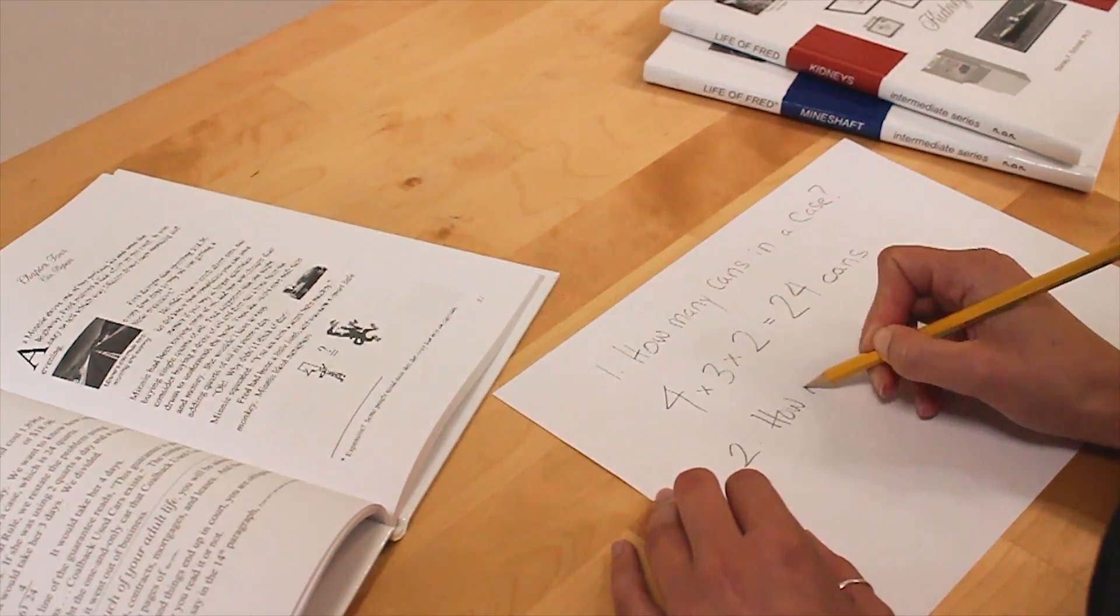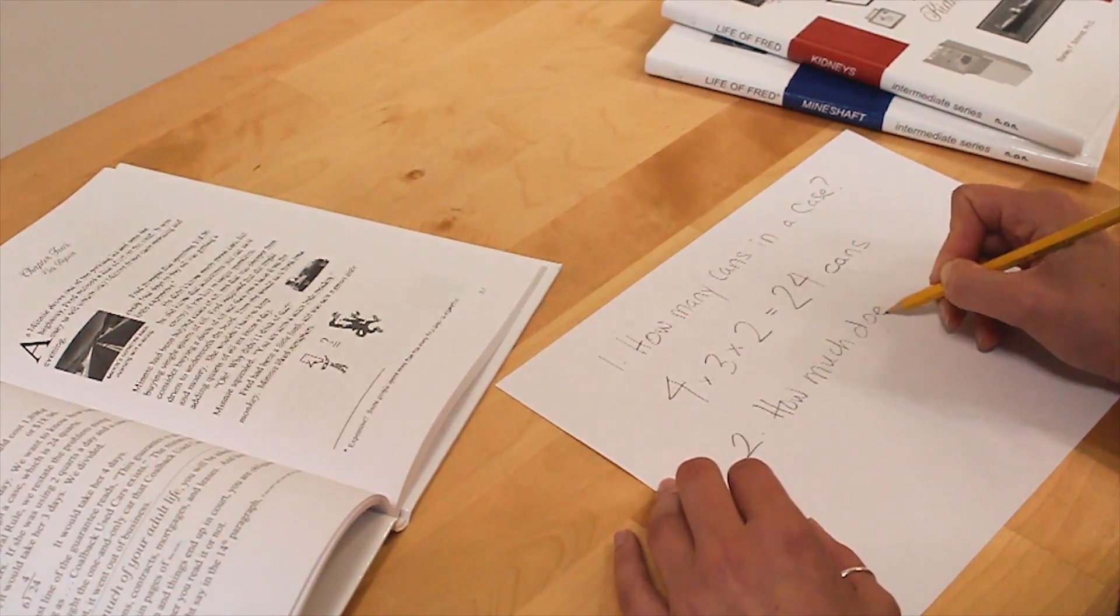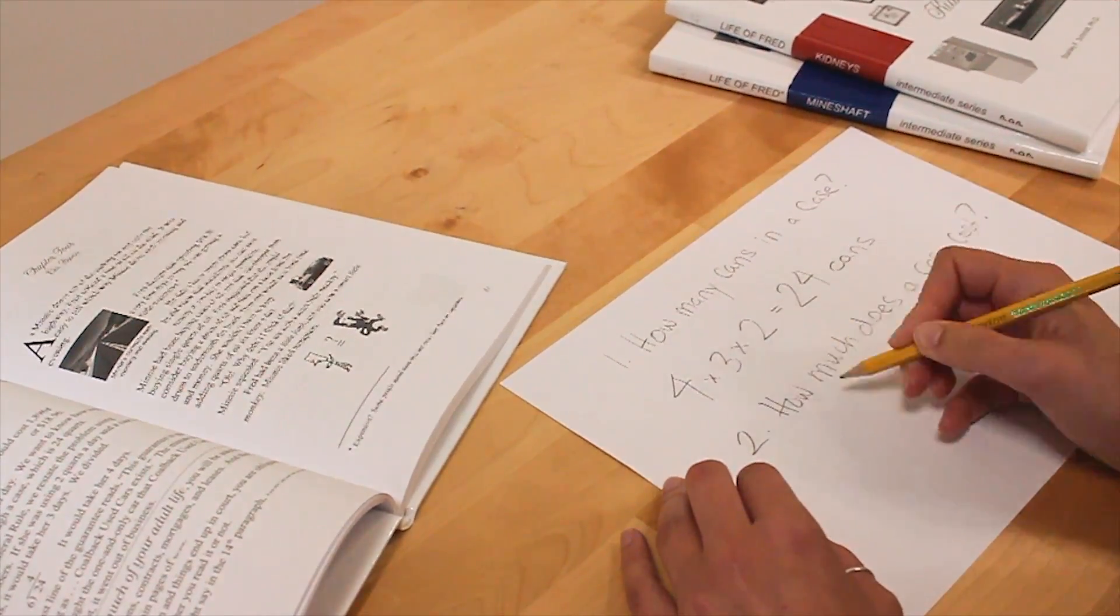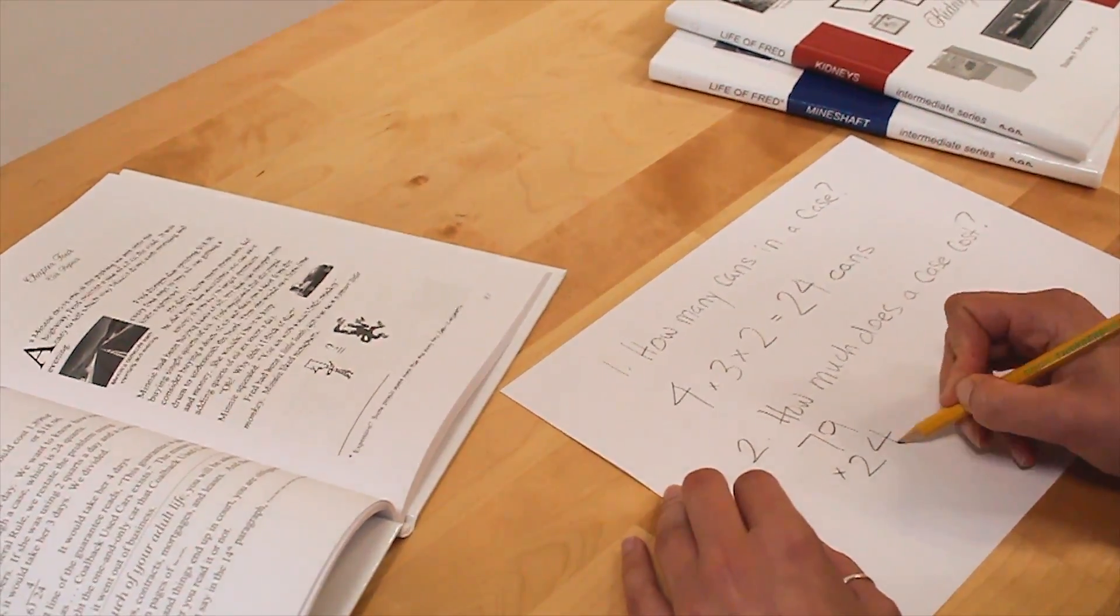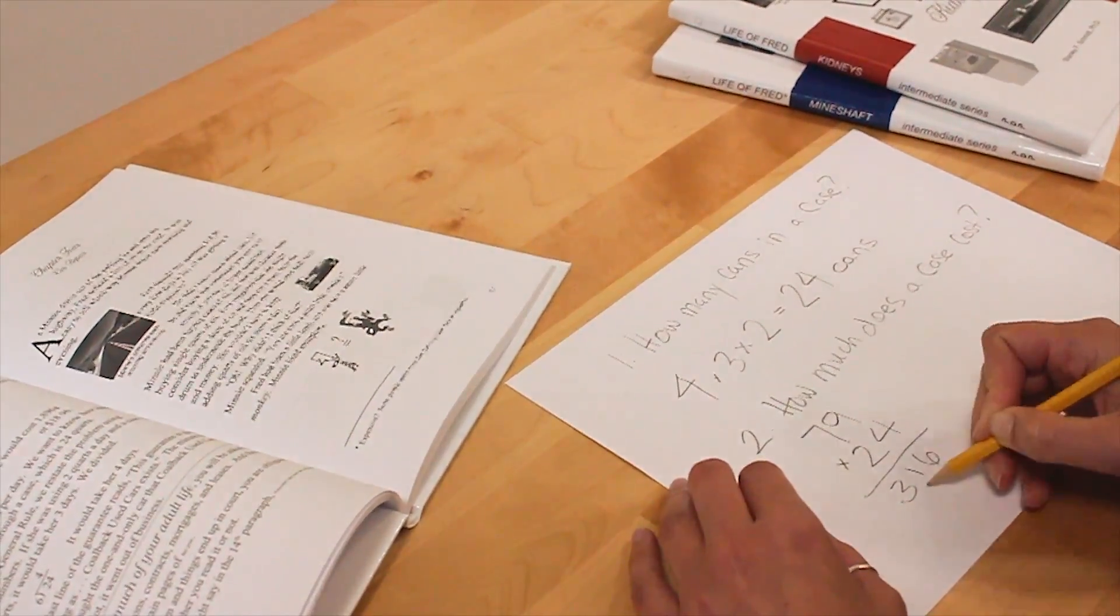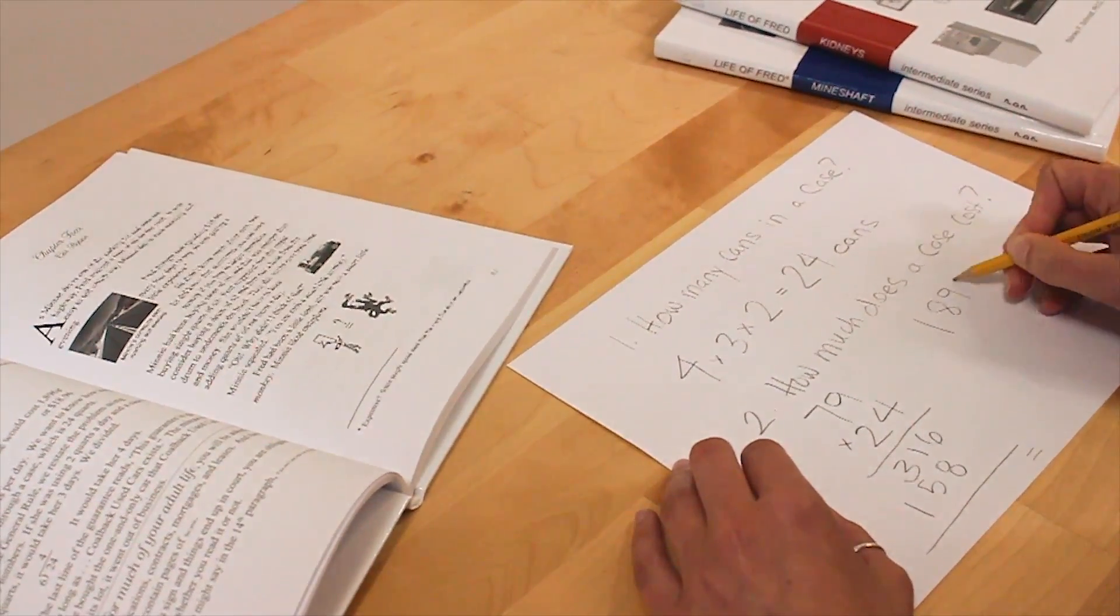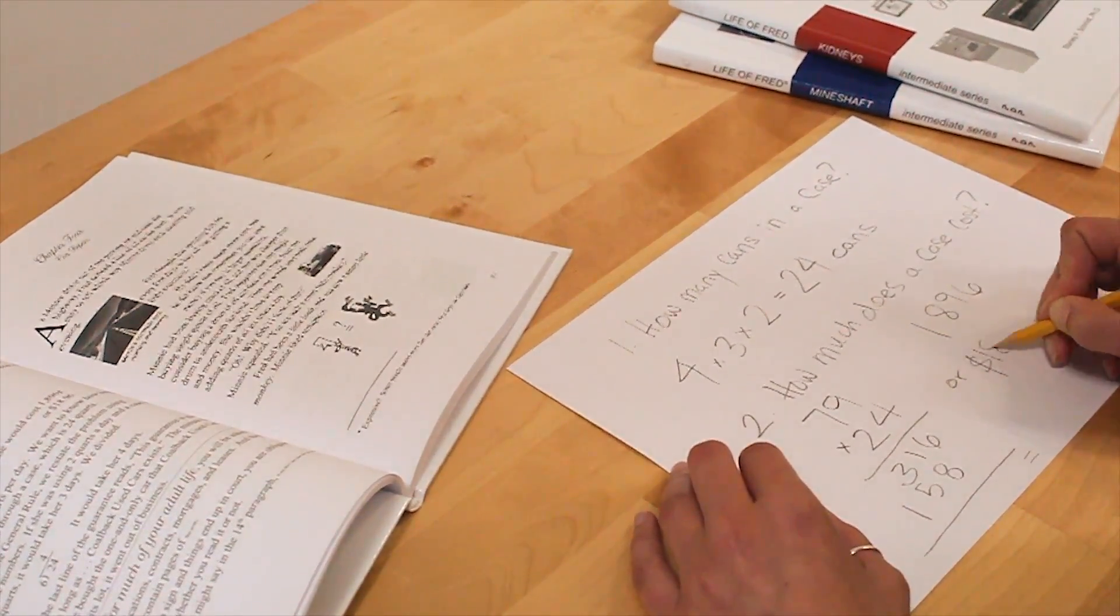Fred asks the second question. Oily oil costs 79 cents per can. How much would this case cost? We multiply 24 by 79 and get 1,896 cents or $18.96.